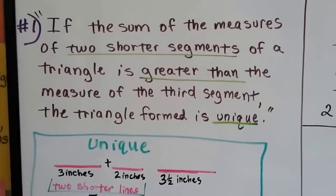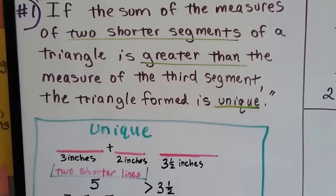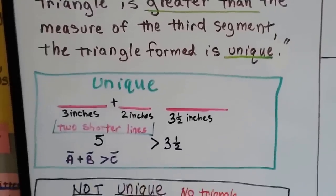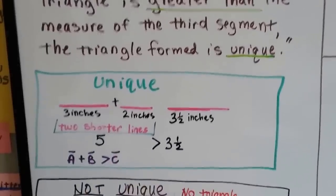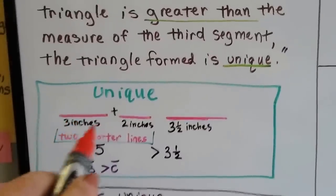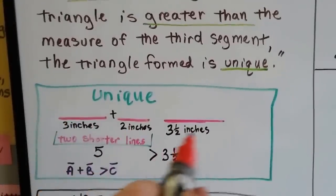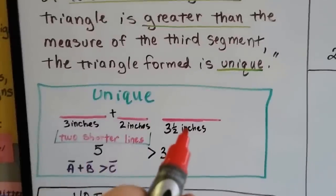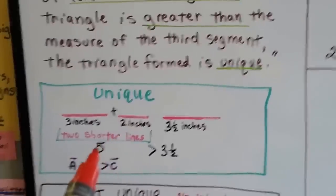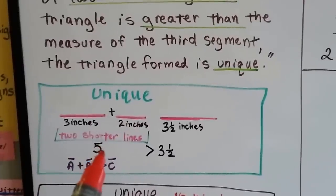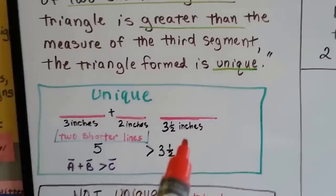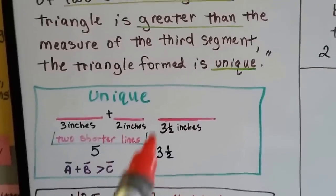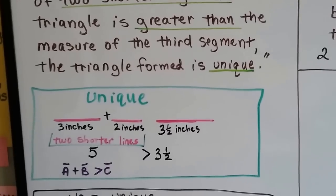If the sum of the measures of the two shorter segments of a triangle is greater than the measure of the third segment, the triangle formed is unique. For example, with a three-inch, two-inch, and three-and-a-half-inch segment, the two shorter ones added together — three plus two equals five — is greater than three and a half, so that makes a unique triangle.